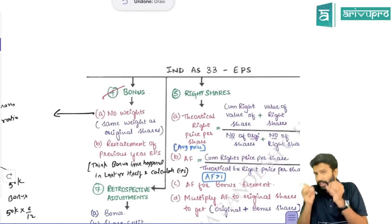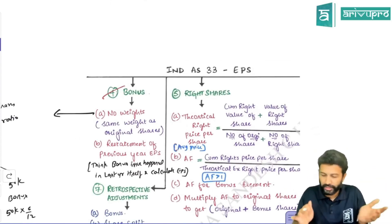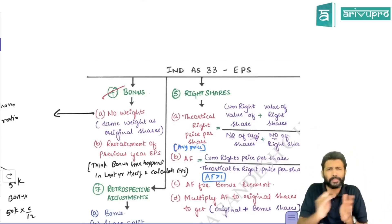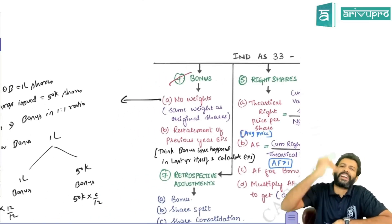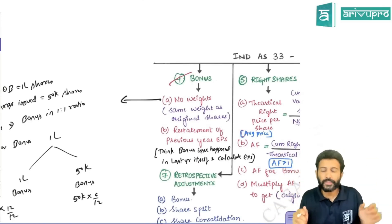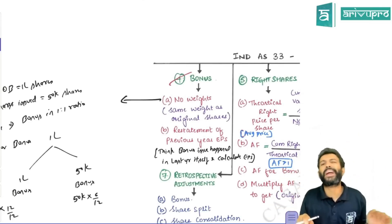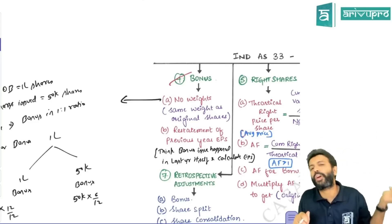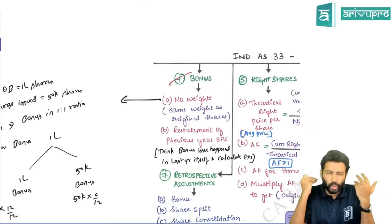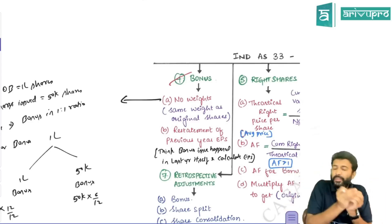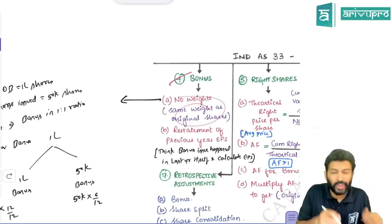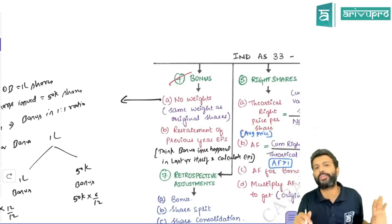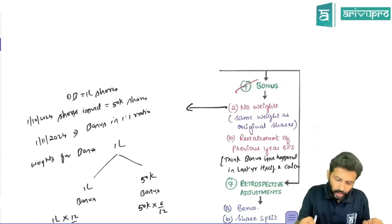In EPS, theory is not much important; practical problems are more important. Bonus shares are additional equity shares given by the company at free of cost. Since bonus shares are issued at free of cost, there is no impact on earnings. That's the reason due to bonus shares, EISH as numerator will not get impacted. You should not assign any separate weights for bonus shares; give the same weightage as you give on original shares because bonus shares don't receive any money.